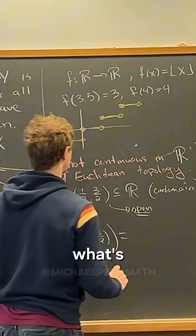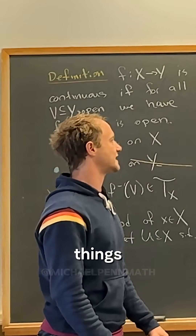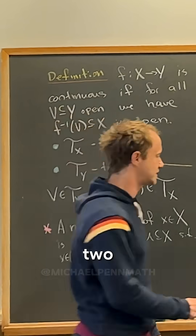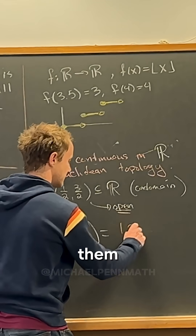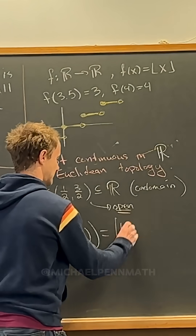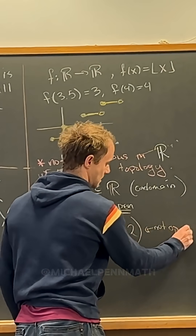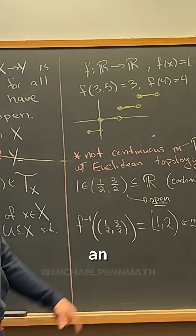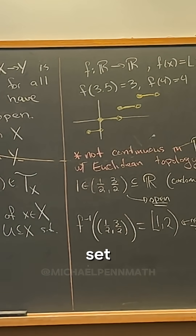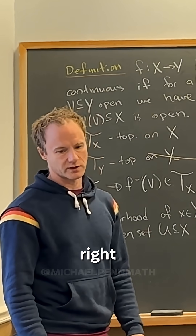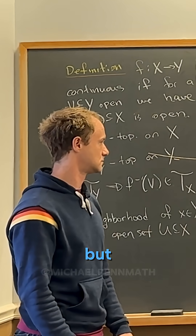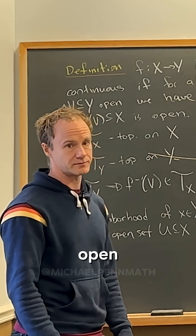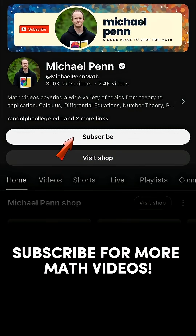What's the pre-image? What things are mapped to 1? The pre-image is [1, 2). Do we include the endpoint? No — it's not open. That means the function is not continuous, because we took the pre-image of an open set and got a set that is not open. This is the pre-image of an open set, and it's not open, so our function is not continuous.